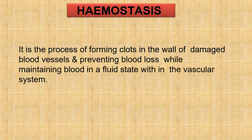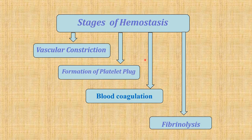Hemostasis or blood coagulation is the process of forming clots in the wall of damaged blood vessels, preventing blood loss while maintaining blood in a fluid state within the vascular system. The four stages of hemostasis are: vascular constriction (vasoconstriction) immediately after injury, formation of platelet plug (temporary hemostatic plug), definitive clot formation (blood coagulation), and finally fibrinolysis (lysis of the clot).